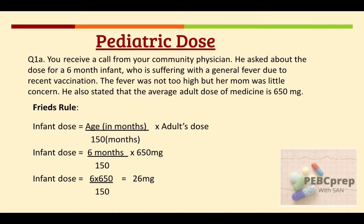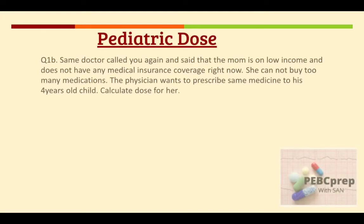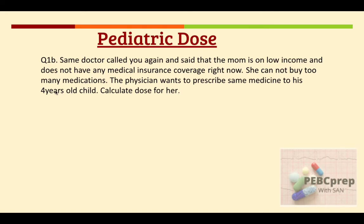This is the dose of the infant. Now in part B of the same question: the same doctor calls again and says the mom is on low income and does not have medical insurance, so the physician wants to prescribe the same medicine to the four-year-old child. The adult dose is still 650 milligrams and the child's age is four years, so we will apply Young's rule.